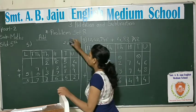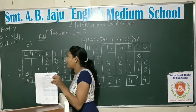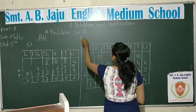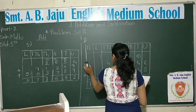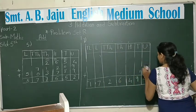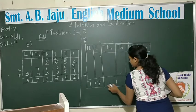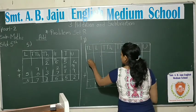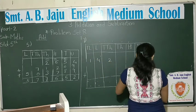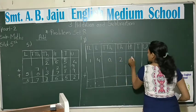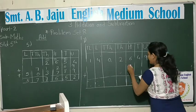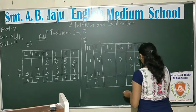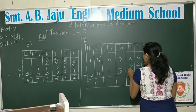Question number 5 and question number 6. Question number 7: 20,00,649,524 plus 28,000 plus 13,749.